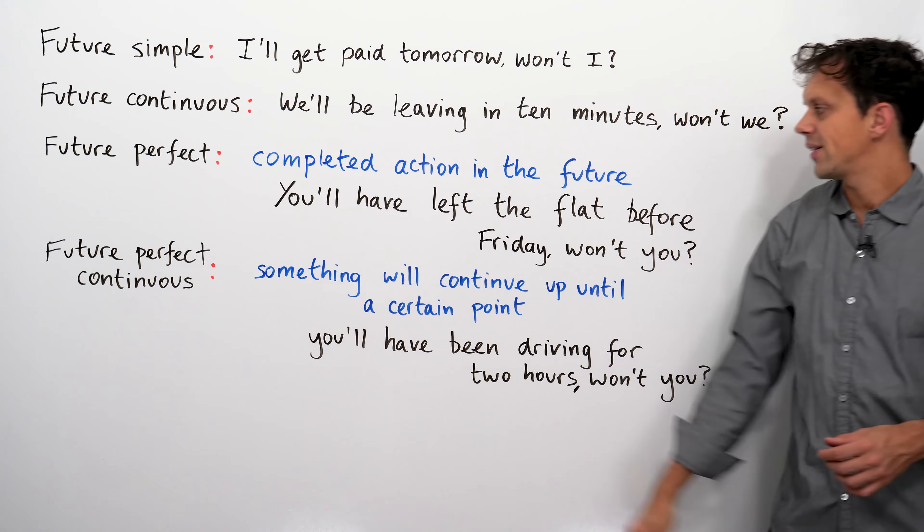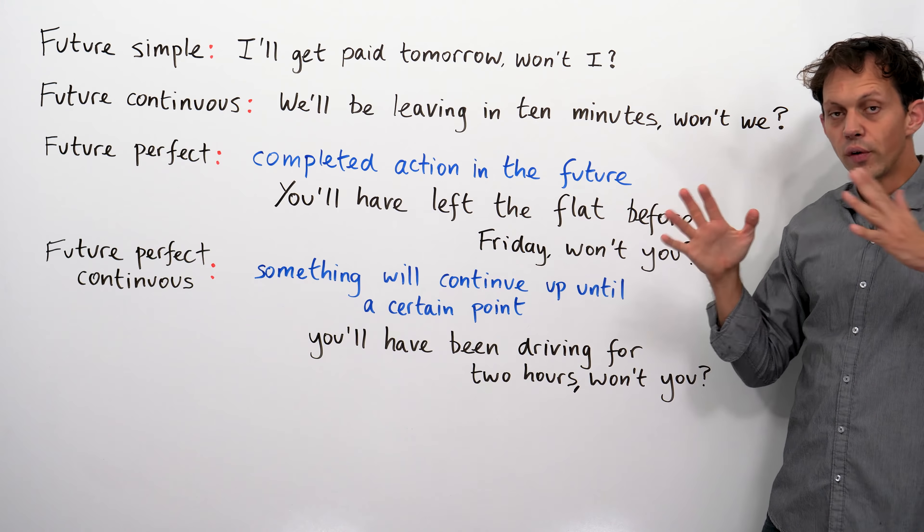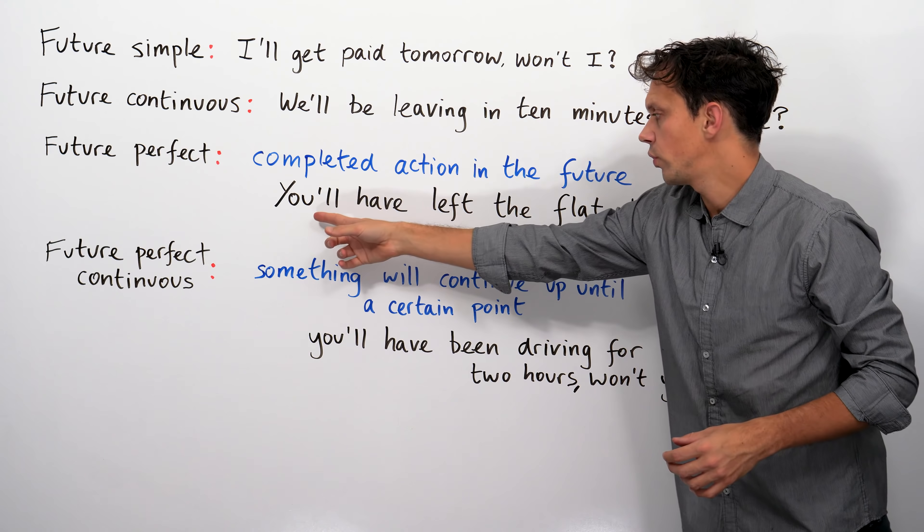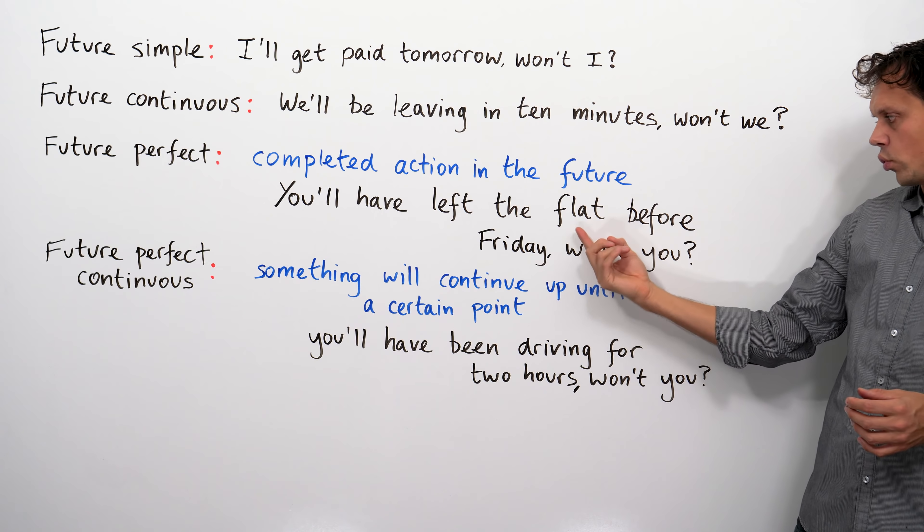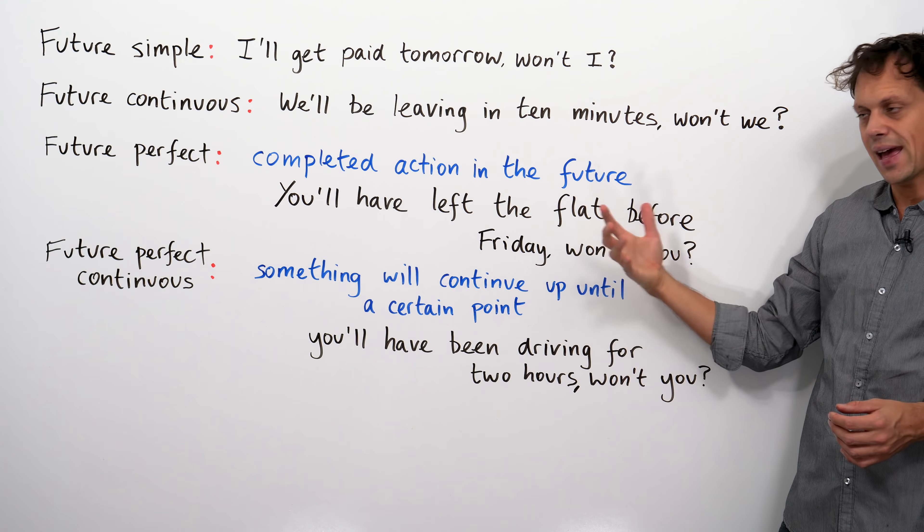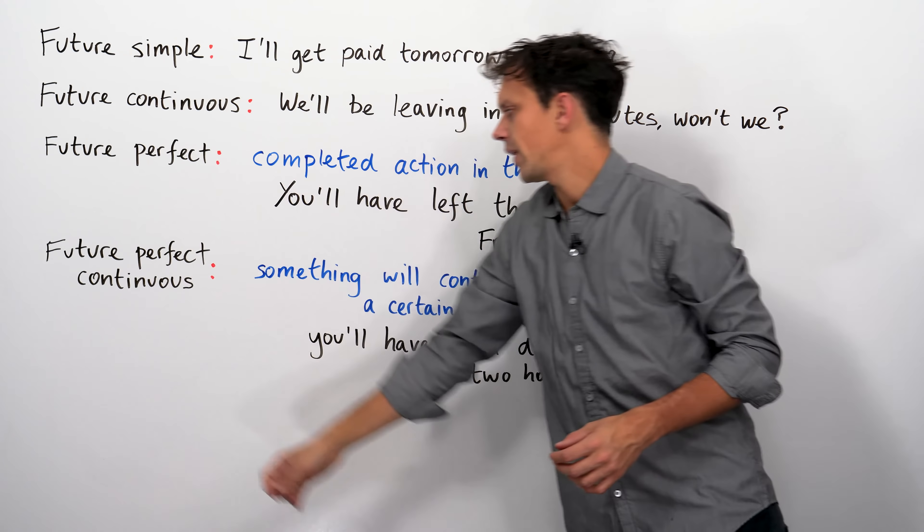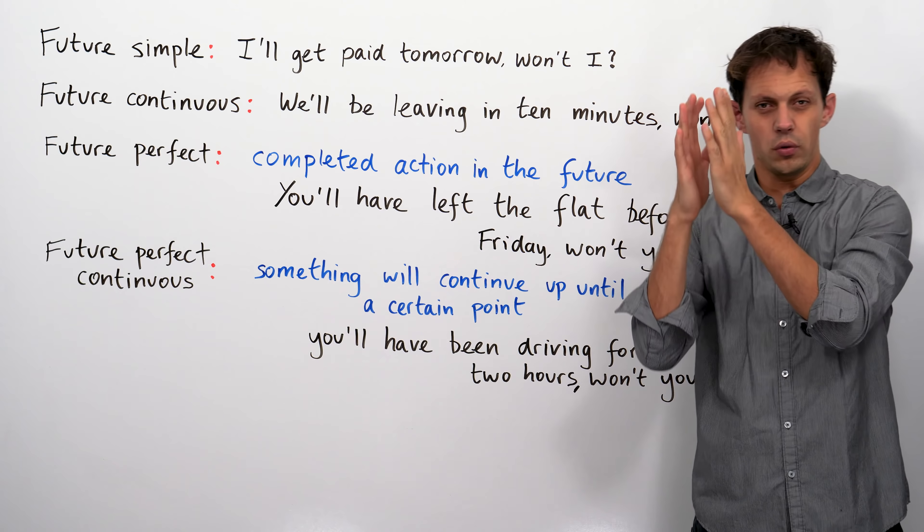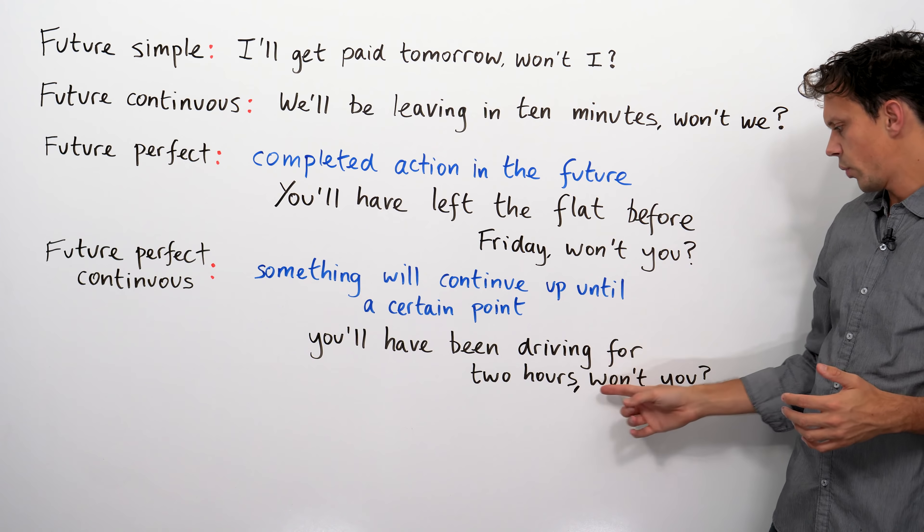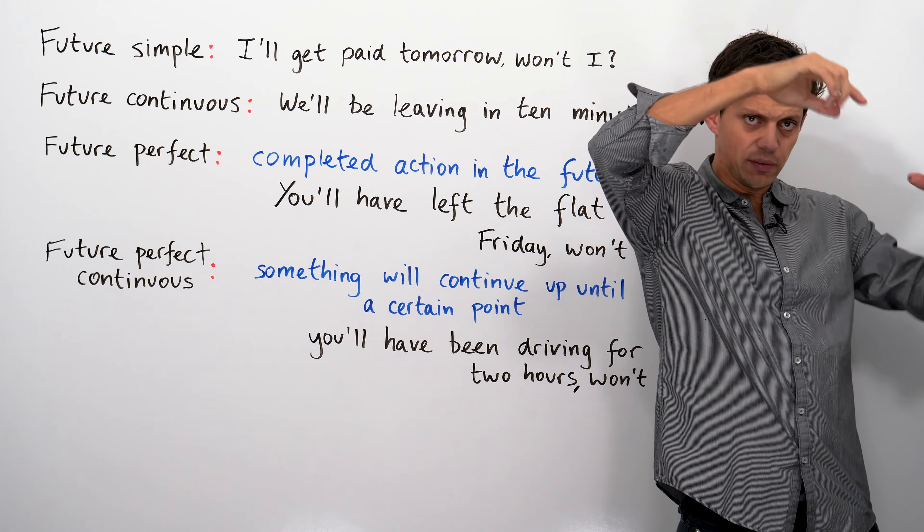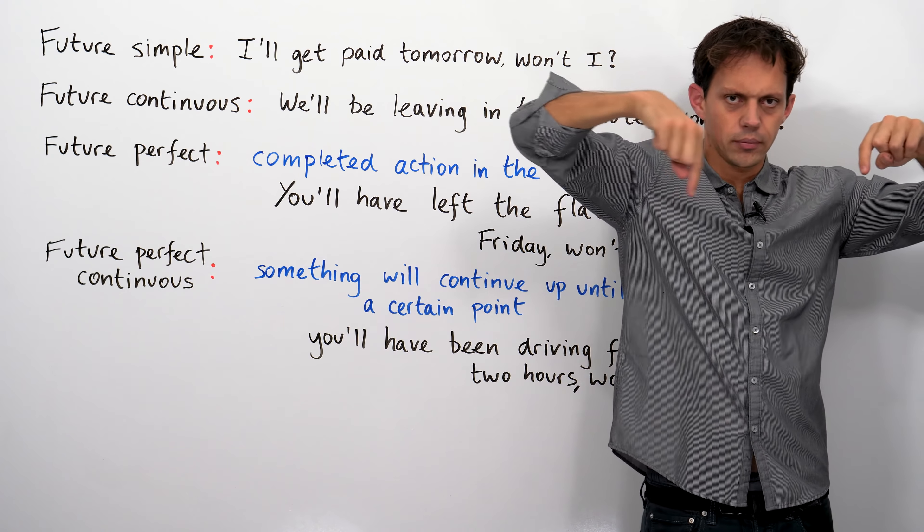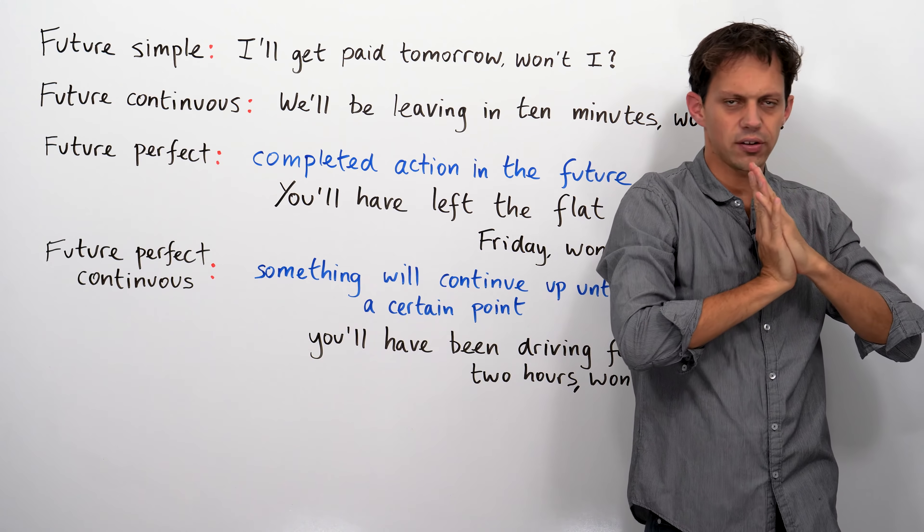The future perfect is a sort of imagined completed action in the future. For example, you'll, short for you will, have left the flat or apartment before Friday, won't you? Double checking that it's going to happen. The future perfect continuous is something that will continue up until a certain point. So, you'll have been driving for two hours, won't you? So, I'm imagining that in the future, and we're going to be kind of looking back. So, in the future, and thinking what has just been happening up until that point.